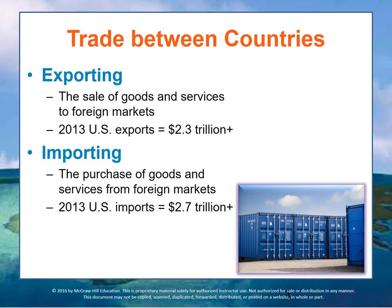Most nations trade globally to obtain needed goods and services and the funds to pay for them. Nations trade by exporting goods and importing goods. Exporting is the sale of goods and services to foreign markets. As you can see from this slide, the United States annually exports over $2.3 trillion in goods and services, as of 2013. However, the U.S. also imports goods and services, with imports totaling more than $2.7 trillion in 2013.